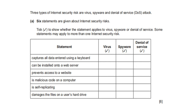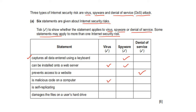Three types of internet security risk are virus, spyware, and denial of service (DOS) attack. Six statements — tick whether each applies to virus, spyware, or denial of service. Captures all data entered using a keyboard — spyware. Can be installed onto a web server — virus and spyware. Prevents access to a website — denial of service. Is malicious code on a computer — virus and spyware. It is self-replicating — virus. It damages files on a user's hard drive — virus.